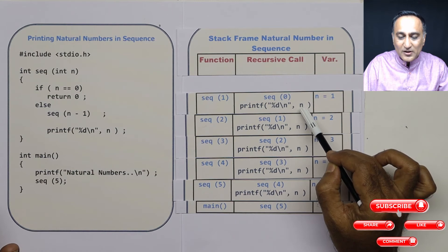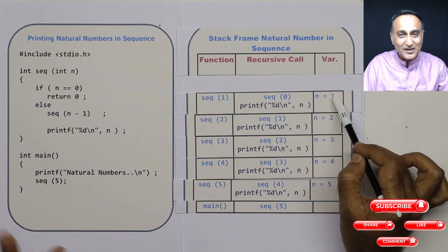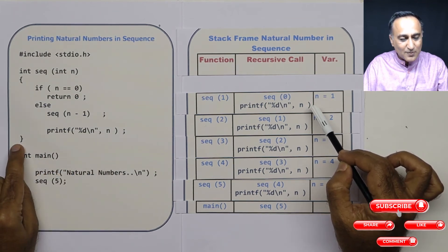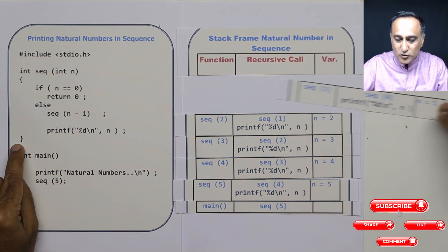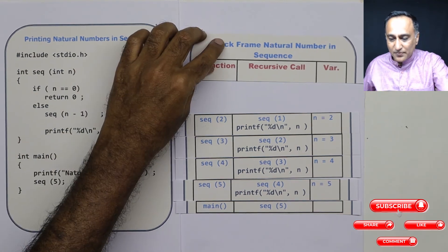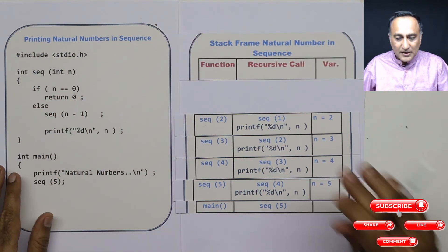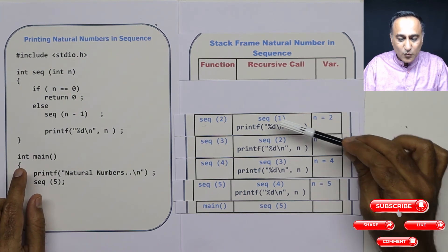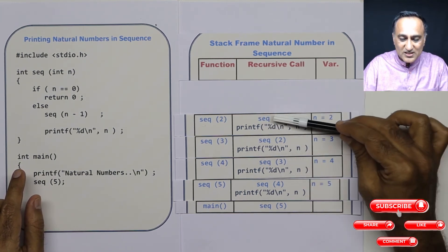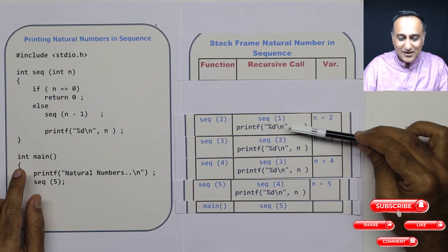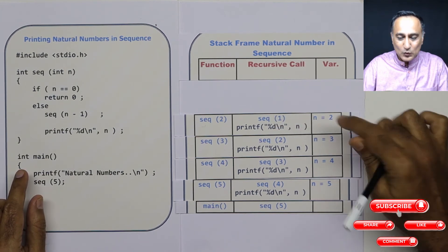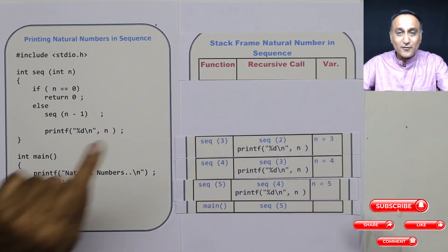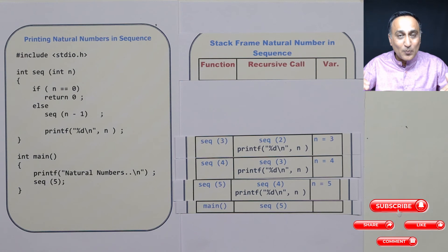Now I'm going to print the value of n. What is the value of n? It is 1. So 1 gets printed. Now this printf with value 1 has been executed, so this frame also gets popped off the stack. Next, sequence(1) was popped out, so that has already executed. Now I'm going to print the value of n — n is 2. So after 1, it's printing the value of 2. Sequence(2)'s activation record is now popped out.